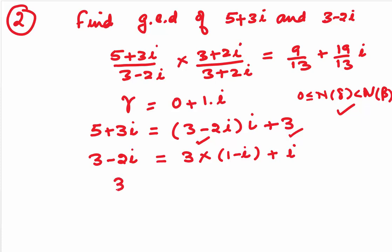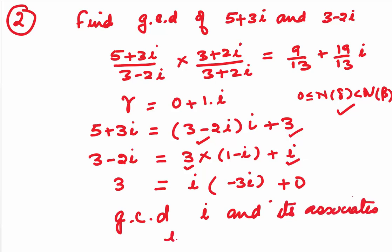In the next step, we would be dividing 3, this 3 by i. So, 3 would be nothing but i minus 3i plus 0. So, what is the GCD? GCD is nothing but i and its associates, which are nothing but i, minus i, 1 and minus 1. So, these are the GCDs of your question.